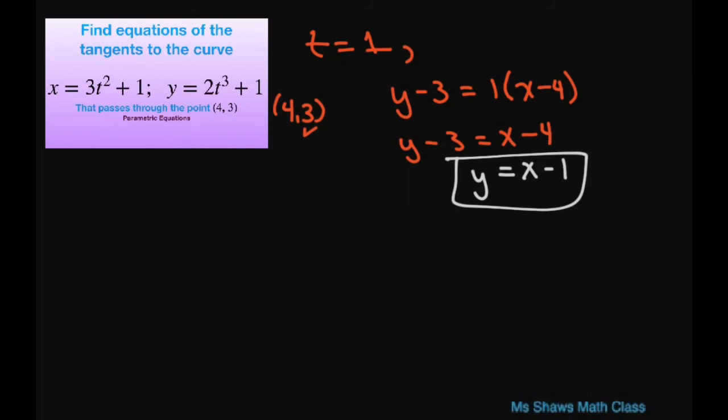Now at t equals negative 2, this is tangent to our point 4 comma 3. At t equals negative 2 you substitute in negative 2 in for x and y. You're going to get y minus negative 15, that's when you substitute in 2 here. You're going to get negative 15 equals your slope is t is negative 2 and you have x minus 13. So this is going to be tangent to the curve at 13 comma negative 15.